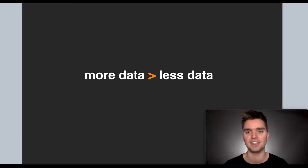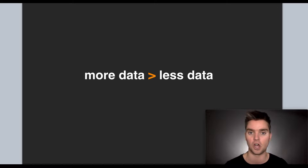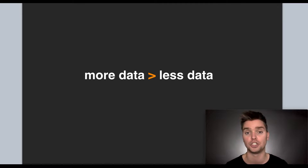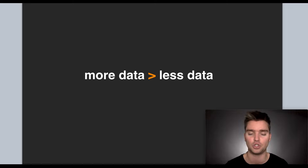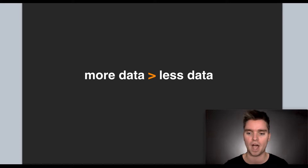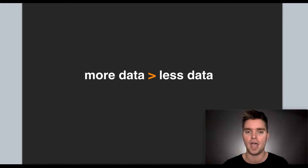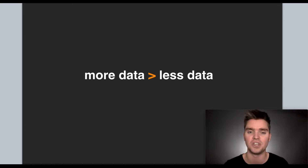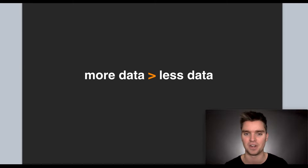We all know that more data is better than less data, but why don't so many Amazon sellers put this into practice when researching products to sell on Amazon? What most new sellers do is they'll use one tool like Helium 10, Viral Launch, or Jungle Scout, and just look at the opportunity score or certain metrics within that tool only, and use that to make a decision. And that is a terrible, terrible idea. You always want to use multiple tools to gather multiple data points because more data is better than less data.